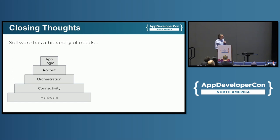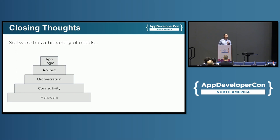Software has this hierarchy of needs. You need some hardware to run it on. For anything interesting these days, you need some way to connect to it — networking or something like that. You want to be able to do stuff across multiple computers, because stuff that only happens on one computer is mostly not interesting anymore, even in your car. So we need some kind of orchestration, some way to make sure stuff is running in the right places, then rollout, and then on top of that, we've got some application logic — the stuff we actually wanted to have happen.